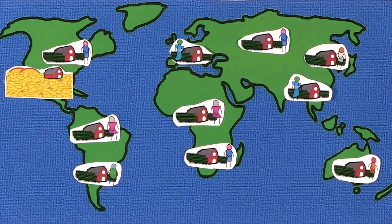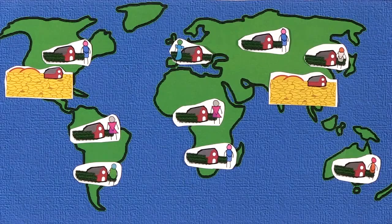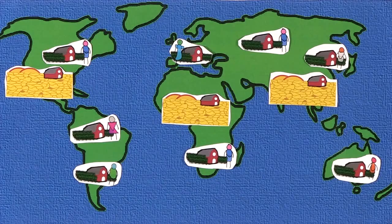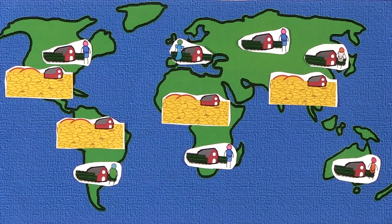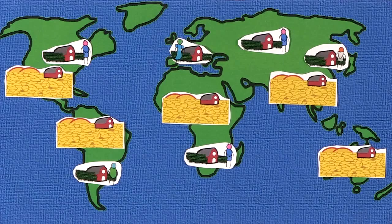Soil erosion is amongst the most pressing issues regarding global food security. Around 40% of the world's agricultural land is already seriously degraded through non-renewable land use. This number, however, is still rising fast. This directly diminishes agricultural production, with severe consequences on a social and economic level in most regions around the world.